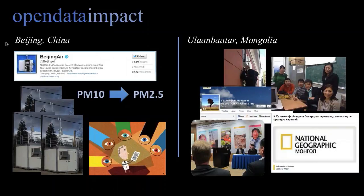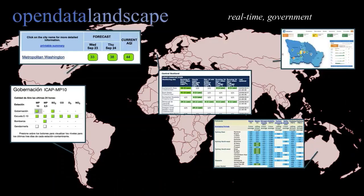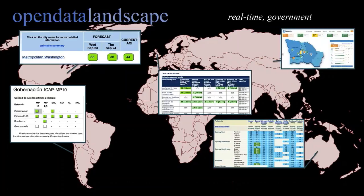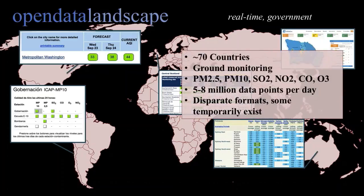Inspired by that, I put together a picture of the open data landscape that exists across the world for real-time government-level air quality data. As it turns out, there's tons of it. About 70 countries have ground monitoring done by their governments that share data in real-time. We estimate there are 5 to 8 million data points per day produced across the world. They're all in disparate formats, on websites with different formatting, though typically measuring the same pollutants. Some also temporarily exist — on a website for 15 minutes on a table before being updated and lost.